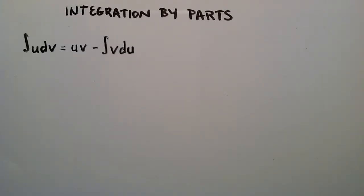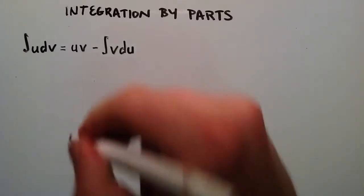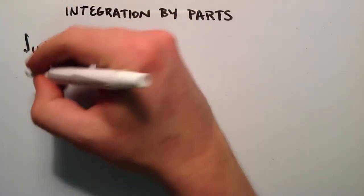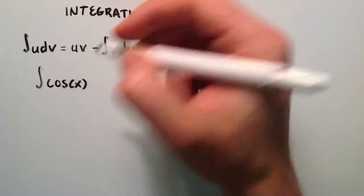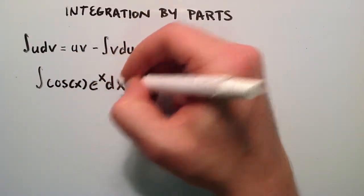Hey everybody, this is Paul. In this tutorial I'm going to be doing an example of integration by parts. For this example, I'm going to do the integral of cosine x times e to the x with respect to x.